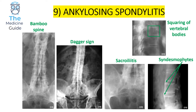Patients can also present with syndesmophytes, where there is ossification of the outer fibers of the annulus fibrosus. Additionally, patients with ankylosing spondylitis are at risk of squaring of the vertebral bodies — a square is drawn around one vertebral body to help compare it with the preceding vertebral bodies. All of these images are suggestive of ankylosing spondylitis, so please make sure you're familiar with all these different features.